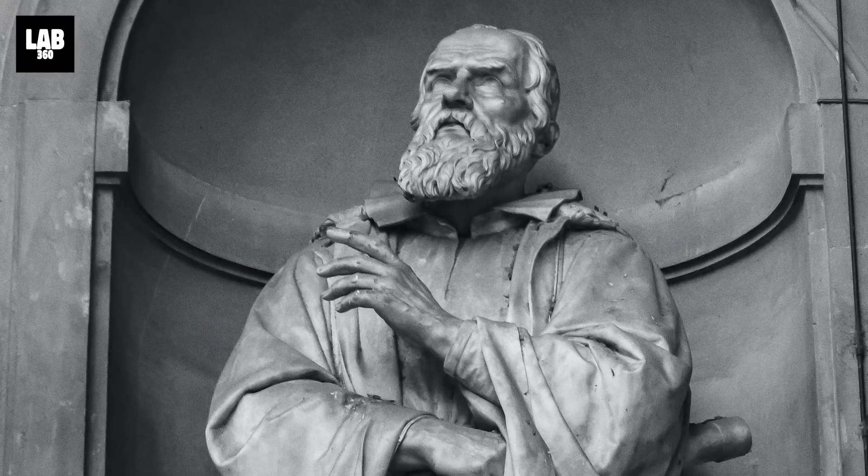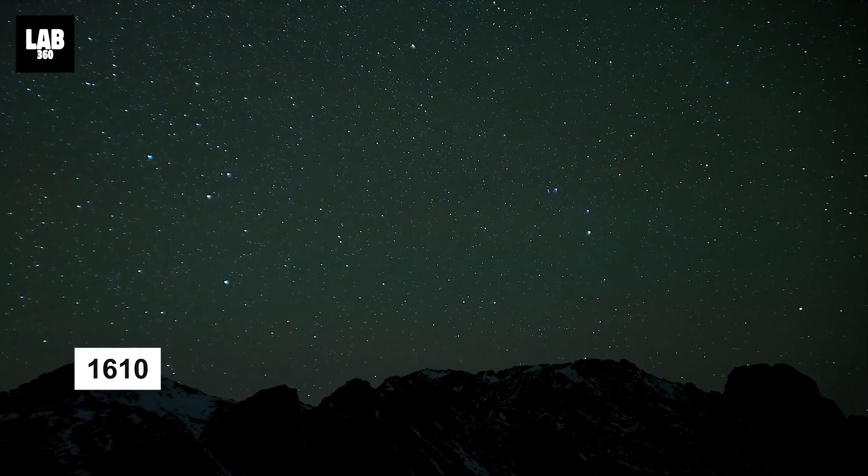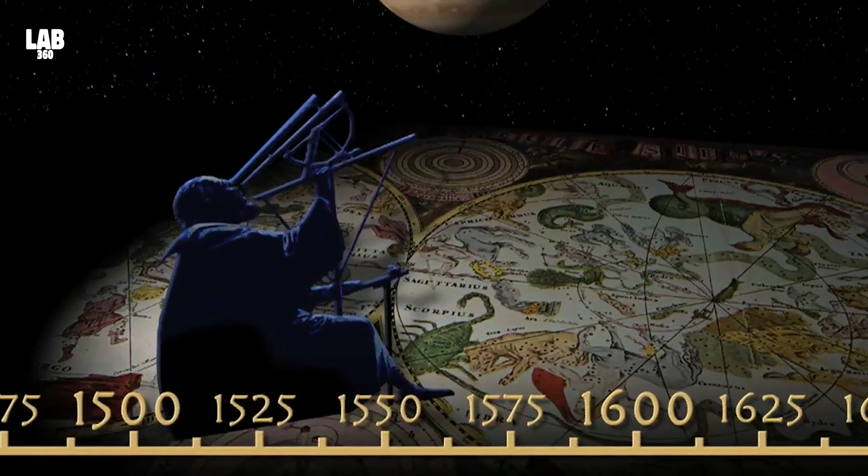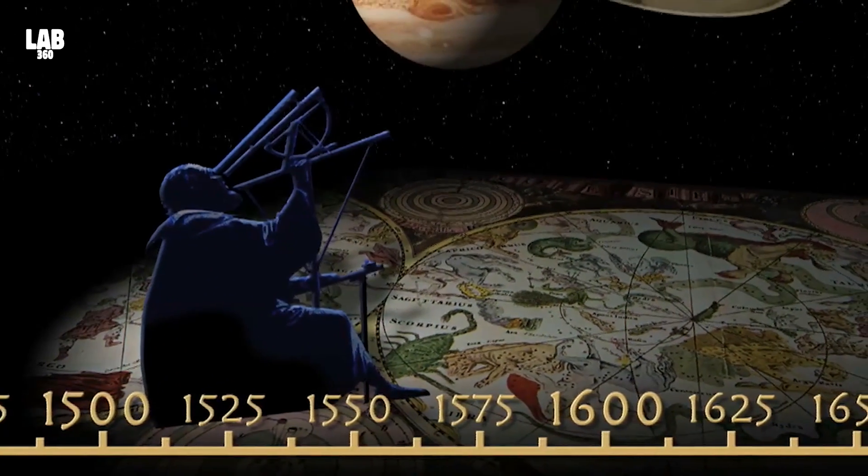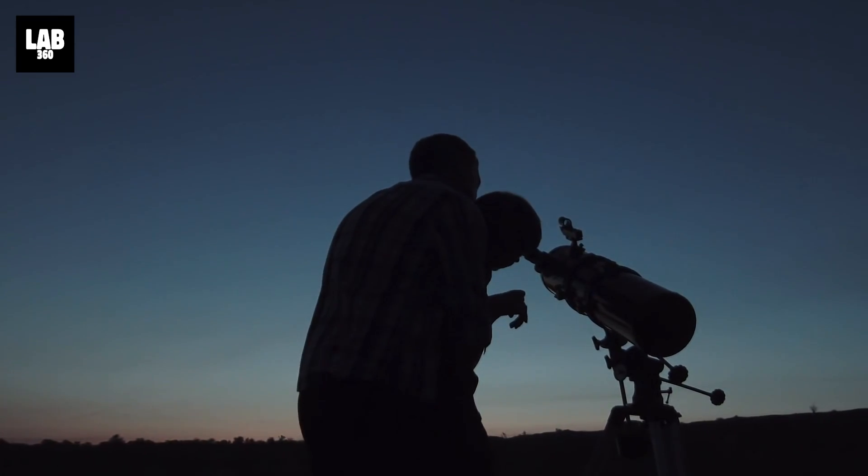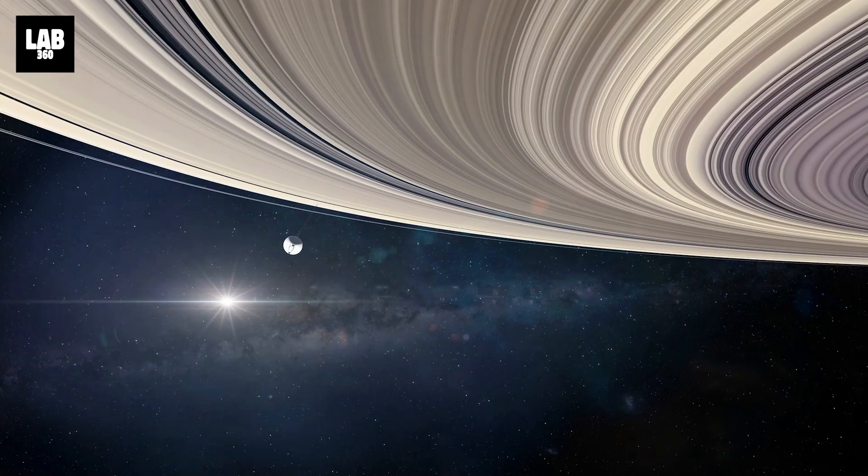Galileo Galilei was the first to observe Saturn's rings in 1610. 45 years later, using a more powerful telescope, Dutch astronomer Christiaan Huygens claimed that Saturn had a thin flat ring. Advances in science in the years following taught us that Saturn actually has many rings.